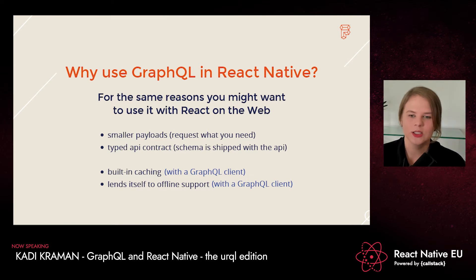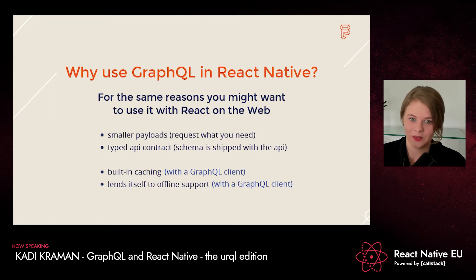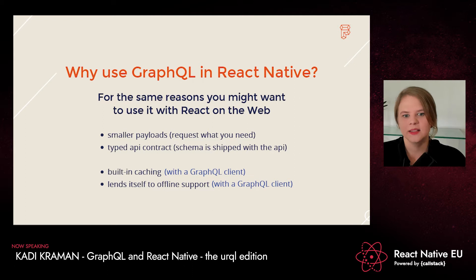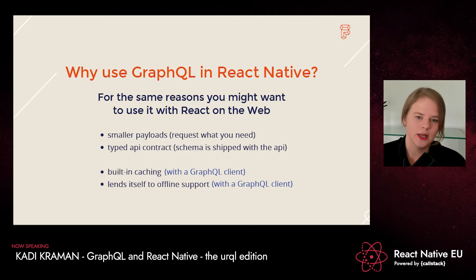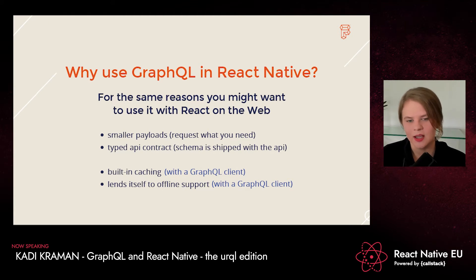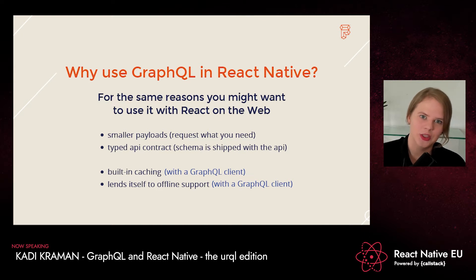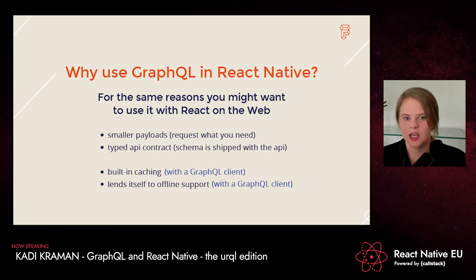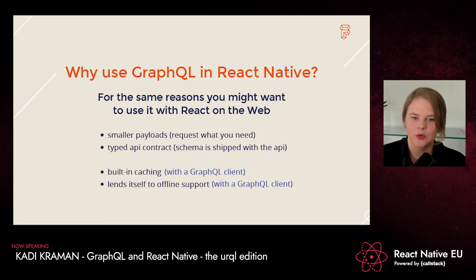I was once part of a project where we actually moved from REST to GraphQL, and the amount of Redux code we got to delete and replace with nothing because it was handled in the library was incredibly satisfying. The other thing is around offline support. For mobile applications, offline support is quite important — users generally don't expect websites to work offline, but they get a bit annoyed if they can't use a mobile app on the tube. Offline support isn't always built into your GraphQL client, but because they already have caching, you're kind of halfway there at least.